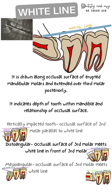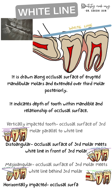If the impaction is mesioangular, the occlusal surface of the impacted third molar will meet the white line behind the third molar. If it is horizontally impacted, the white line will be perpendicular to the occlusal surface of the impacted molar.